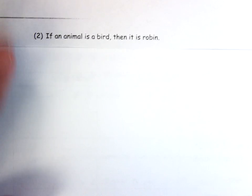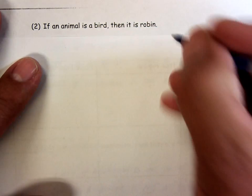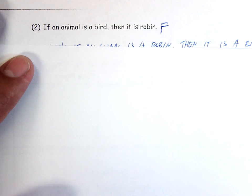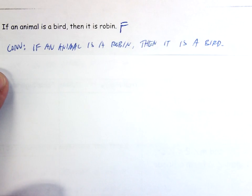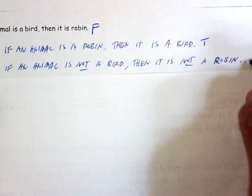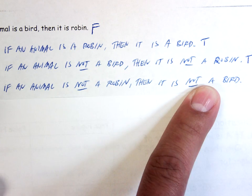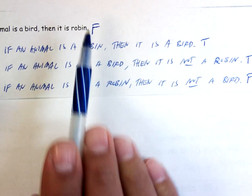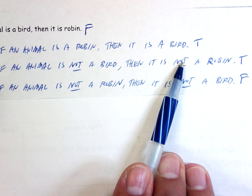Next example. Conditional: 'If an animal is a bird, then it is a robin' — false, because a bird could be something other than a robin. Converse: 'If an animal is a robin, then it is a bird' — true. Inverse: 'If an animal is not a bird, then it's not a robin' — true. Contrapositive: 'If an animal is not a robin, then it is not a bird' — false, because an oriole is not a robin but is still a bird. So conditional and contrapositive are both false; converse and inverse are both true.